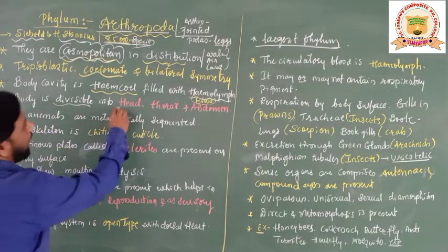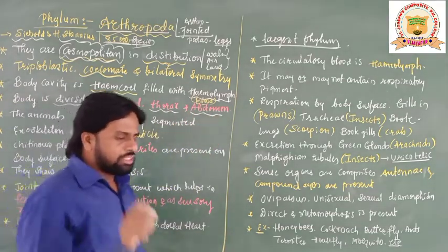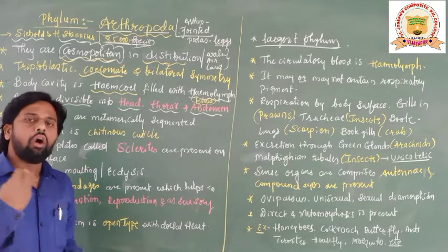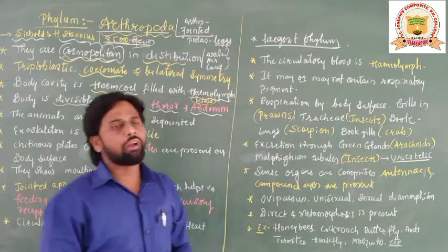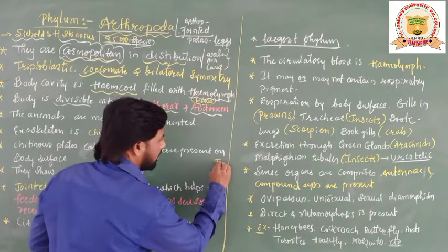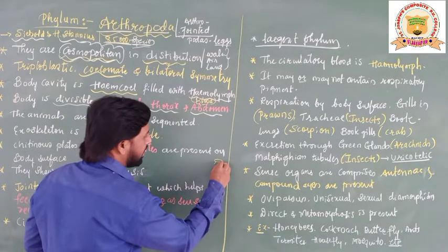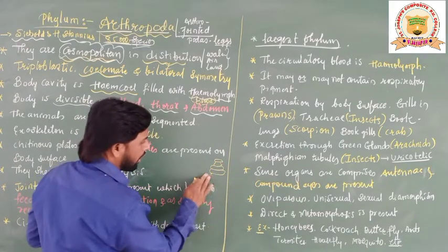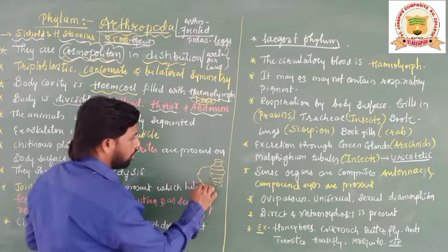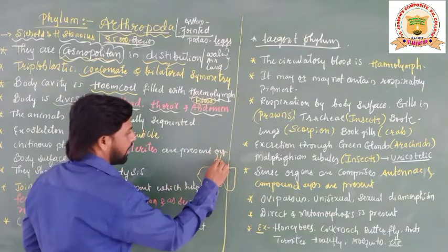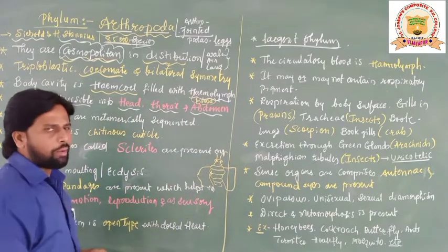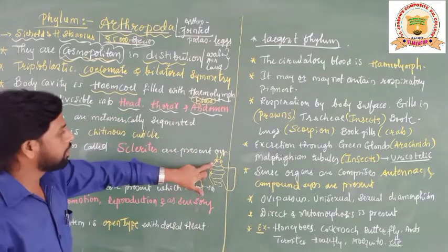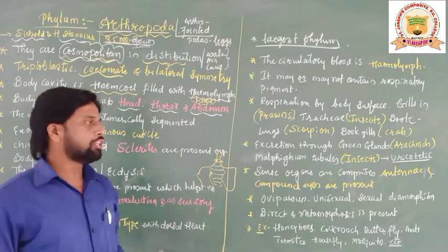The body of Arthropoda is divisible into head, thorax, and abdomen. Just bring the example of cockroach to mind — a common household organism. You can observe a head region, a thorax region, and an abdomen region. There are tentacles and two compound eyes present. The abdomen is the stomach region, and a tail is totally absent.